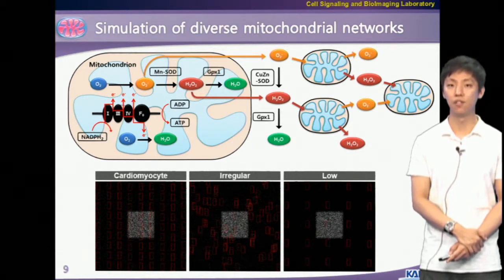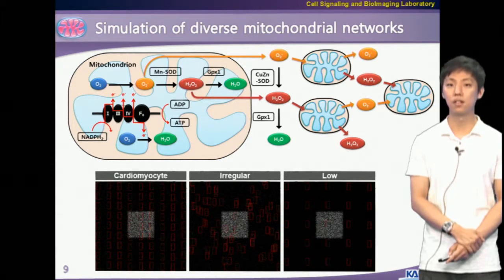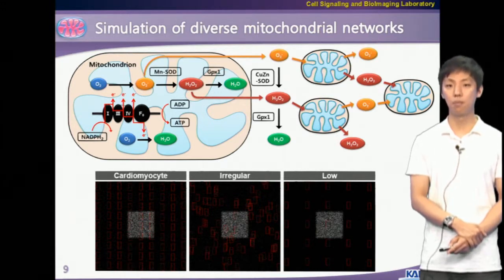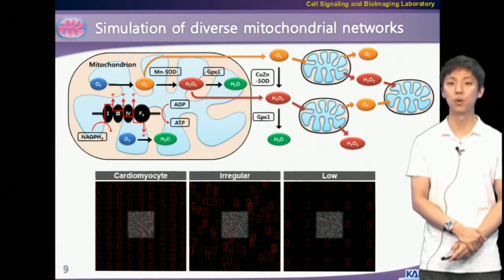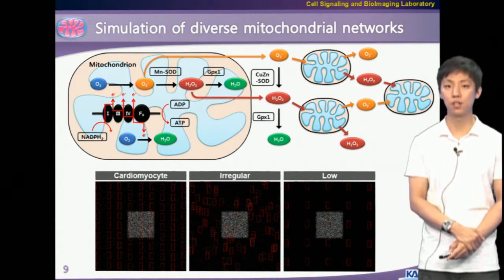Regular distribution of mitochondria is defined as a uniform distance between mitochondria as reported for cardiomyocytes, whereas an irregular distribution implies a random distribution of mitochondria in the cytosol. Because mitochondria are irregularly scattered in neurons, this simulation implies a real-world comparison between cardiomyocytes and many other cell types that have irregular distribution of mitochondria. In addition, the number of mitochondria within a cell also differs substantially according to cell type. Cells with particularly heavy energy demands such as cardiomyocytes contain more mitochondria compared to other cell types.